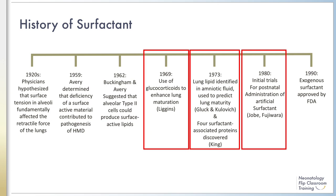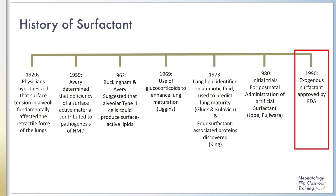Lung lipid could be identified in amniotic fluid and used to predict lung maturity. Four surfactant-associated proteins were discovered and defined by their respective genes. The use of glucocorticoids to enhance lung maturation and postnatal administration of artificial surfactant heralded the advancements in care of respiratory distress syndrome available for treatment of preterm infants today. Surfactant became FDA approved in 1990.